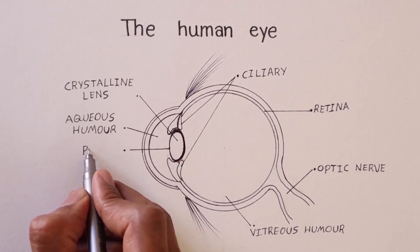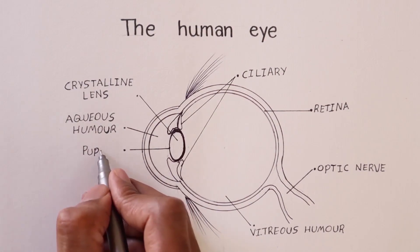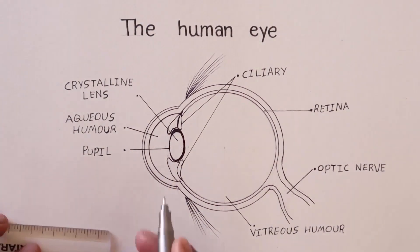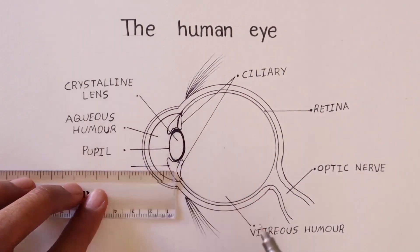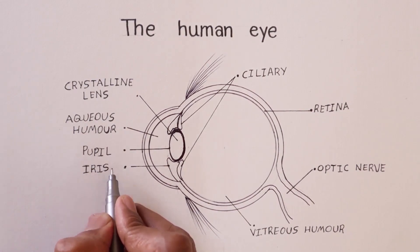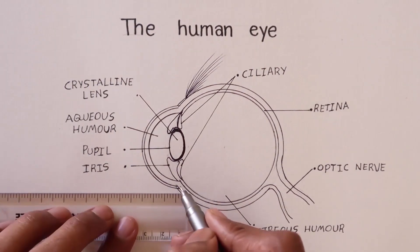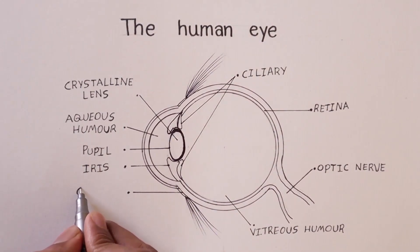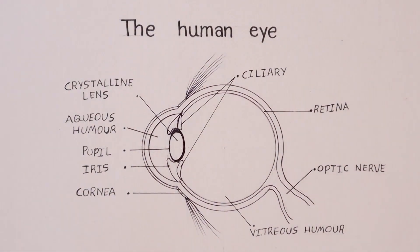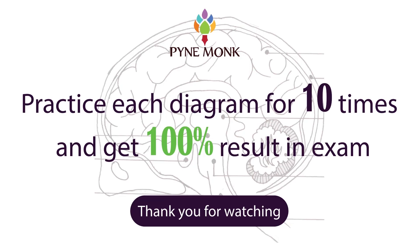As you can see this pupil which plays a very important role in the eye. So this is called as iris. So here you can see one more part that is called as cornea.